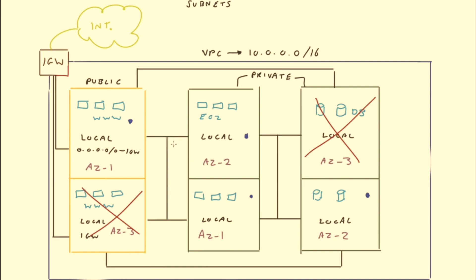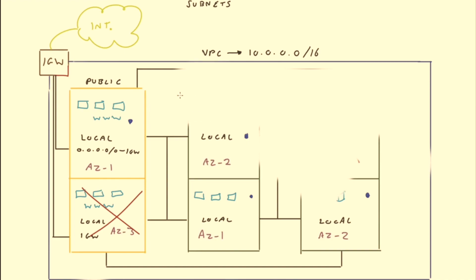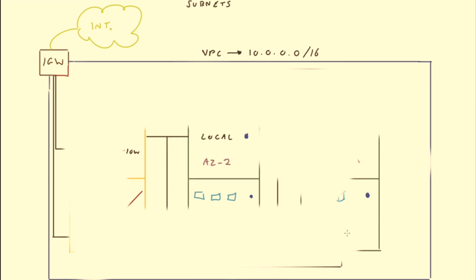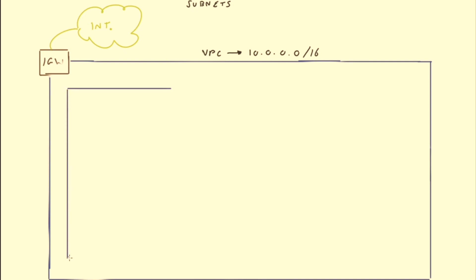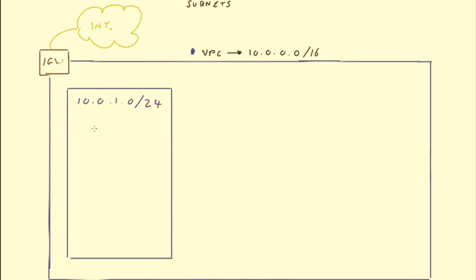Before moving on to security features, let me talk about IP addressing and a couple of points regarding subnets. When you create your subnet you assign it a CIDR block range that fits within the VPC CIDR block. For example, a subnet with address 10.0.1.0/24 — with a slash 24 mask — gives the subnet a total of 256 IP addresses. However, you can only actually use 251 of those IP addresses, and here's why.